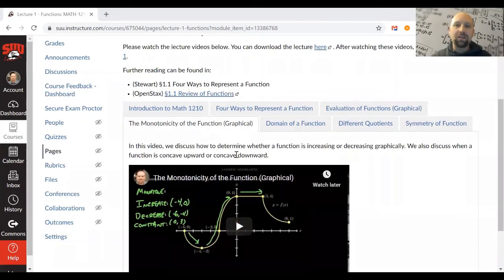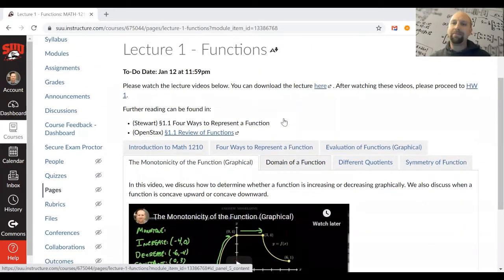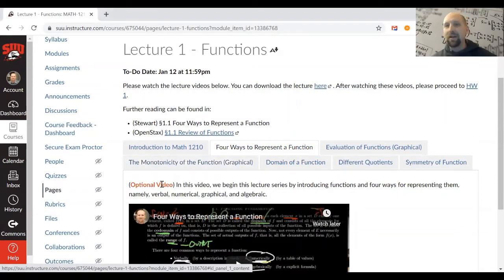So in this first chapter, chapter one on this review of pre-calculus, some of the videos I've labeled as optional. Because, again, if you have taken college algebra and trigonometry, which if you've got into this course you should have because that's the prerequisite, you've learned all of this stuff before. It really comes down to how much of a review do you actually need to do this class.